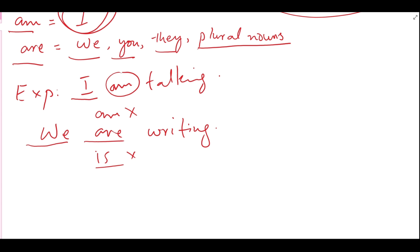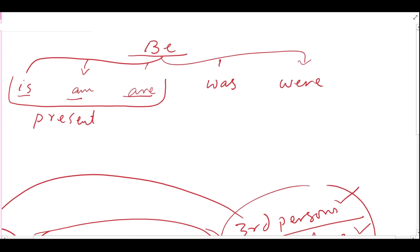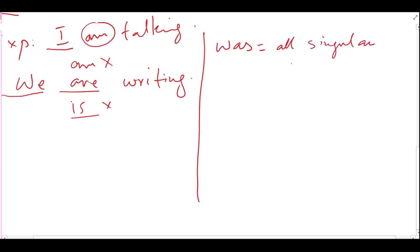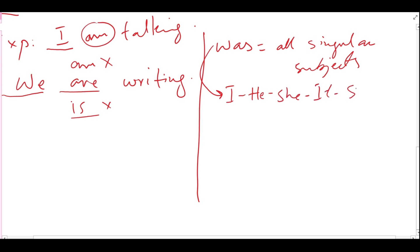Next, we have was and were, which are used in the past tense. Was is used with all singular subjects — meaning was can be used with I, he, she, it, or any singular noun. So was will be used with I as well, because the rule says was is used with all singular subjects.